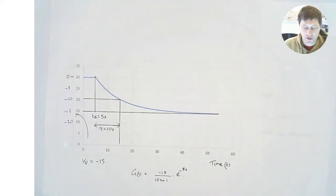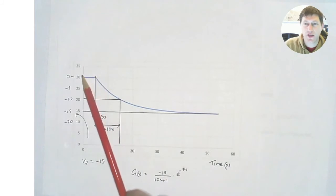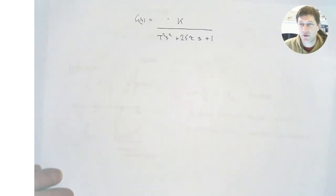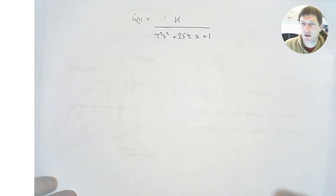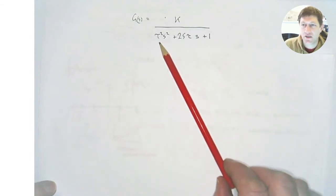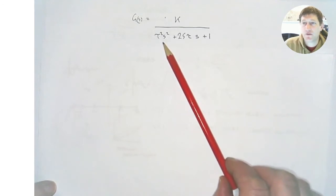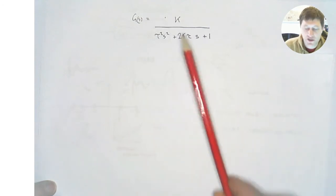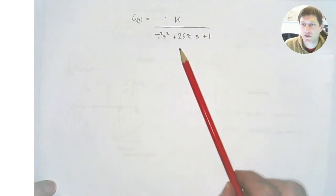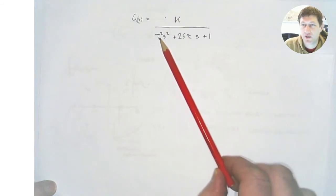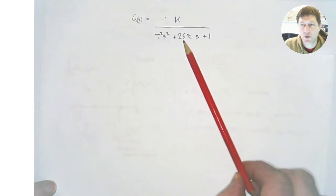We can use that to describe both a process which has a simple time delay, or to approximate higher order processes which end up looking like this. Moving into the second order system: whilst the full derivation is available in the lectures and recommended textbooks, here's a characteristic equation that describes most second order systems. We see some familiar things: the steady state gain term, tau the process time term, and a new term zeta, which we call the damping factor.